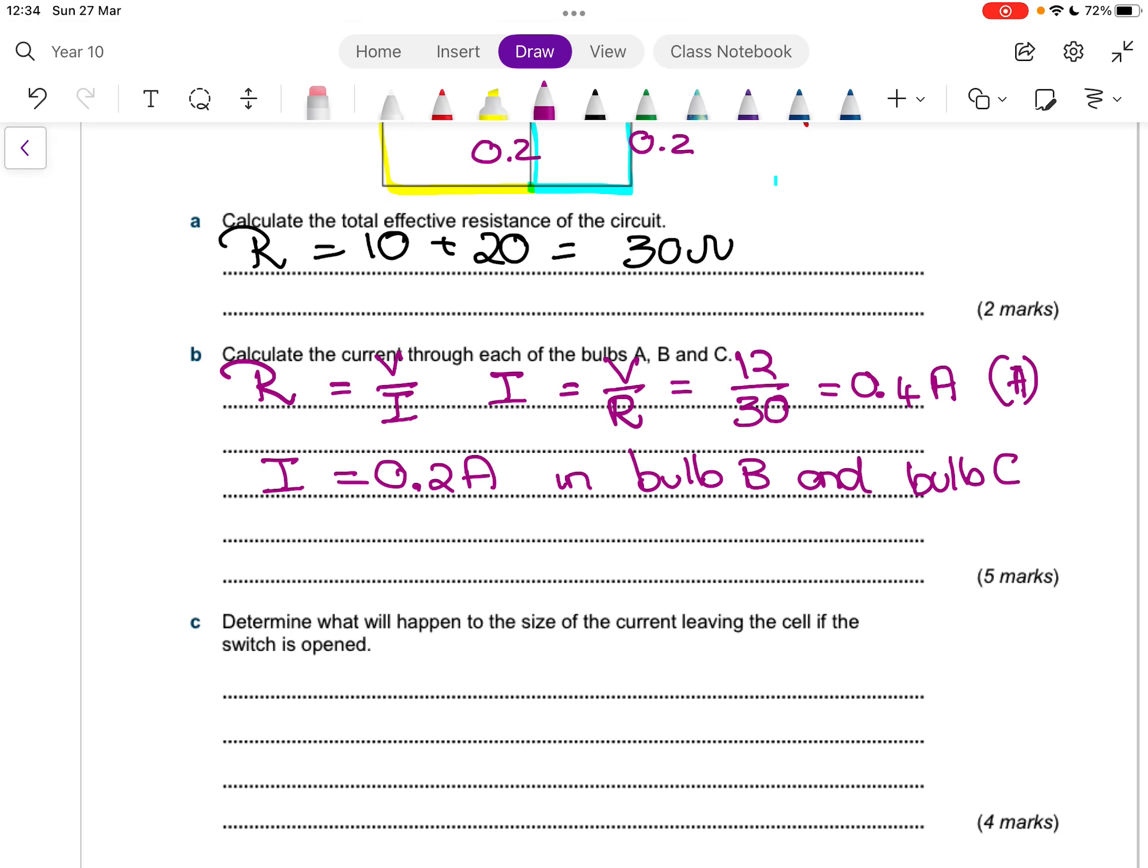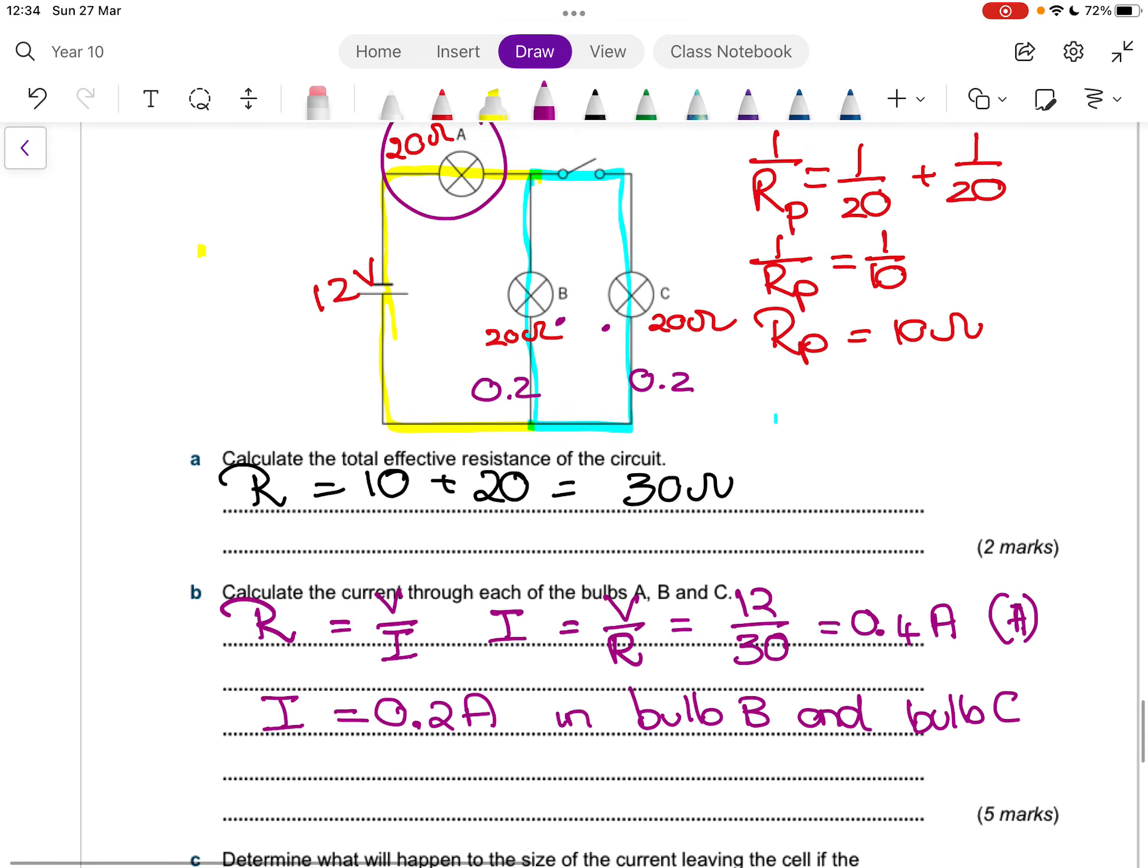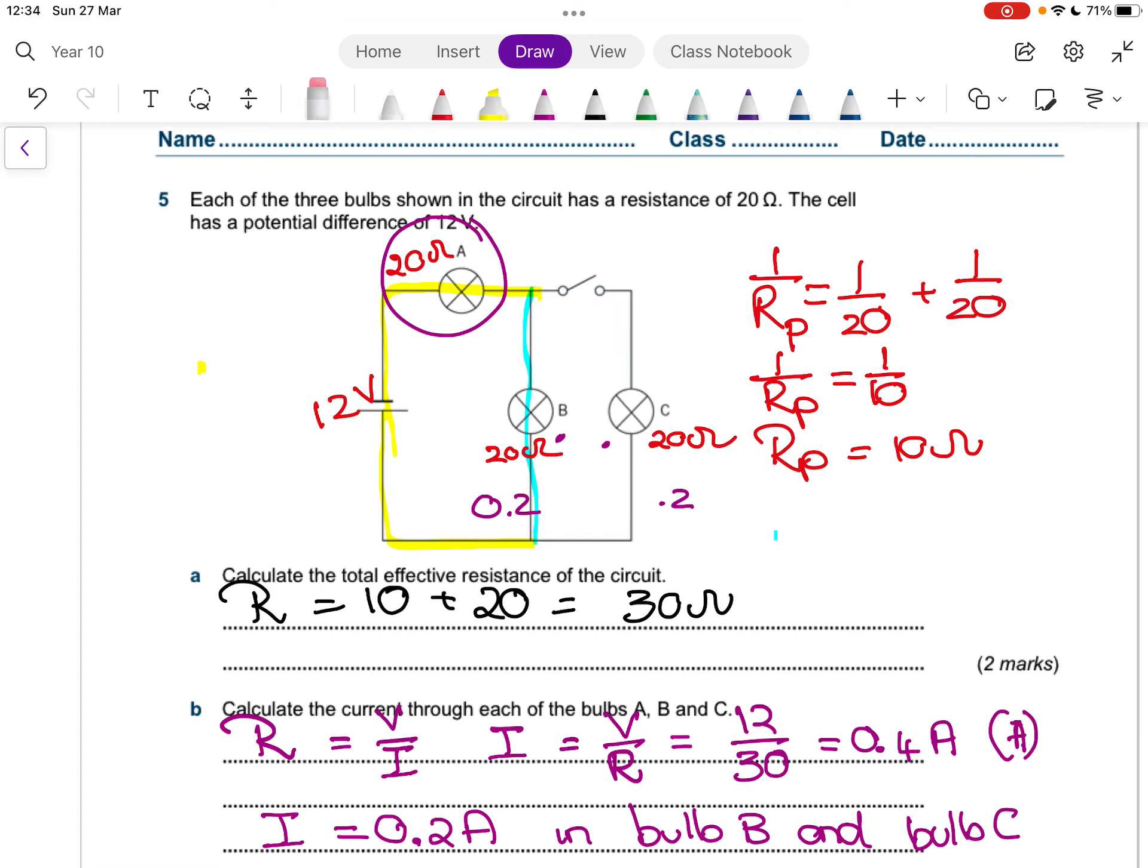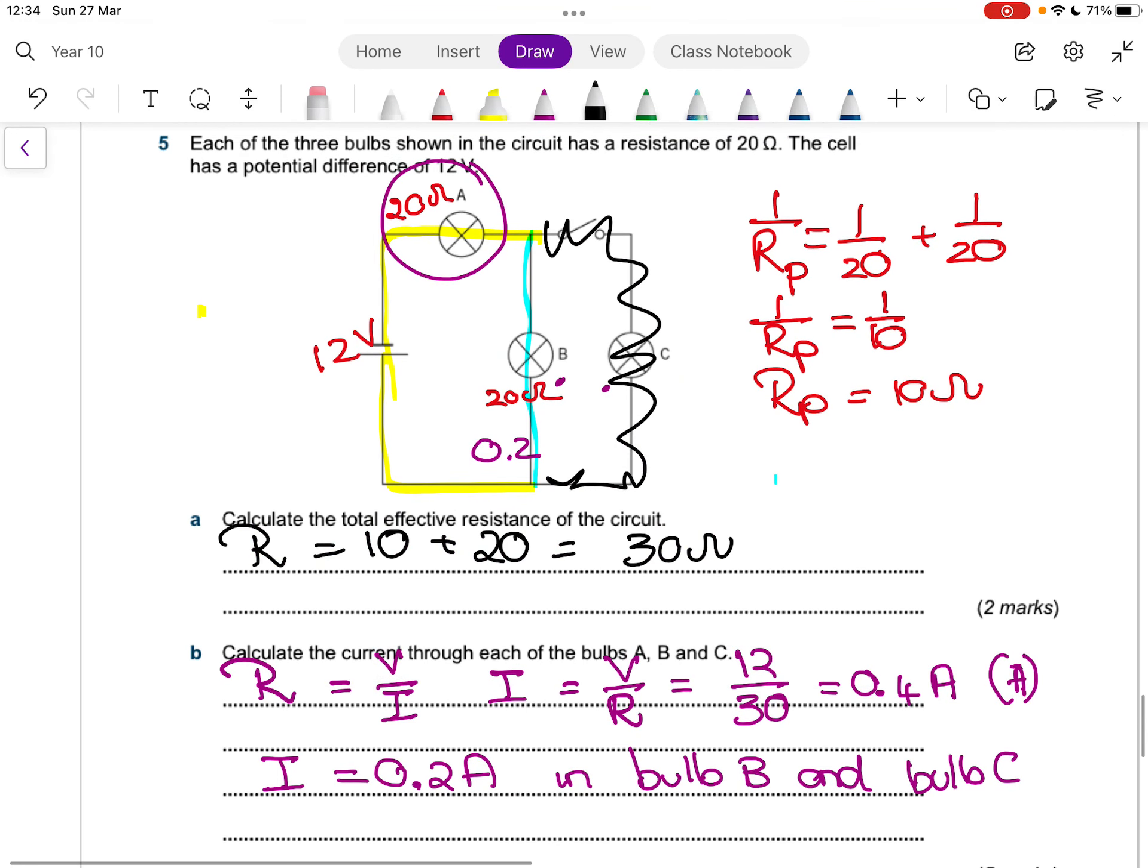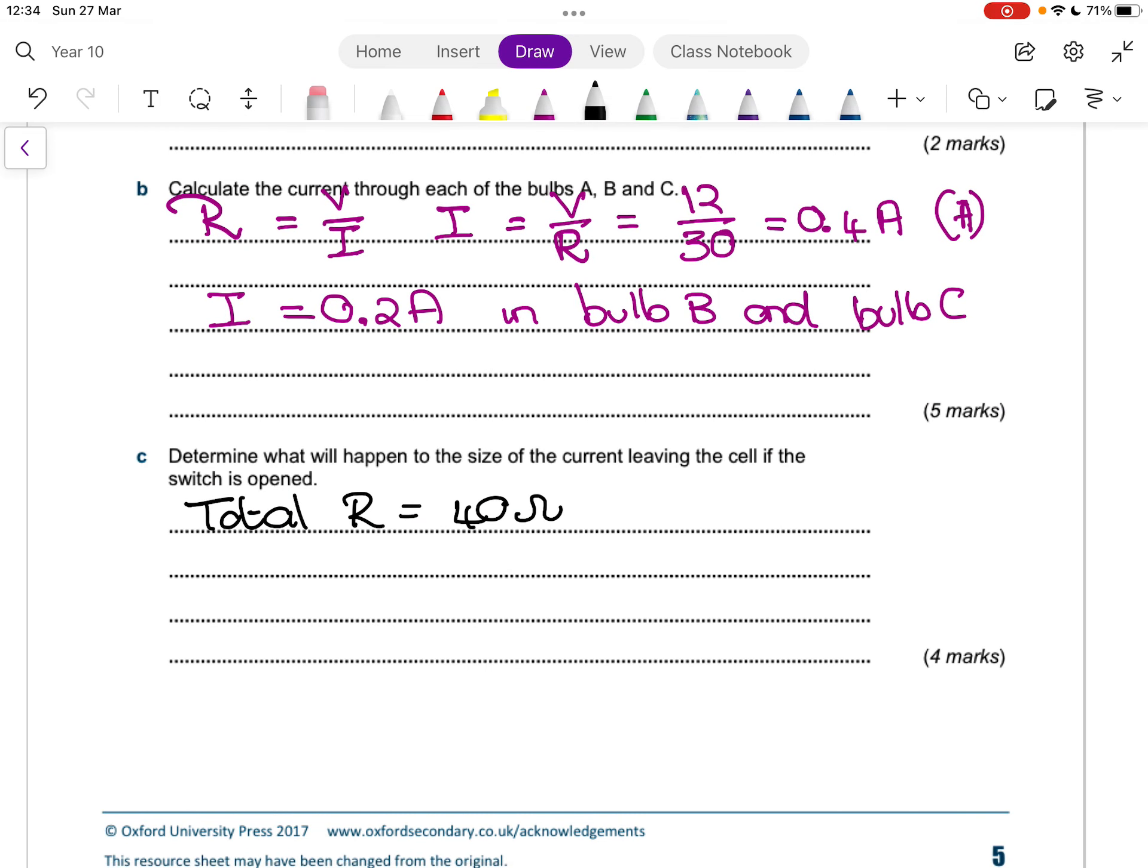Then they say, what will happen to the size of the current leaving the cell if the switch is open? Now, over here, if I open the switch, no current's going to go, that one disappears. Essentially what we're doing is we're going bye-bye, bye-bye C, you no longer exist, current won't go through it. What happens now is my total resistance is going to be 40, because instead of having that extra one in parallel, I have two in series and each one's 20. I add them together, I get 40. We know, and we've done it here, that current is voltage divided by resistance. So now it's going to be 12 divided by 40, so my current goes to 0.3 amps.